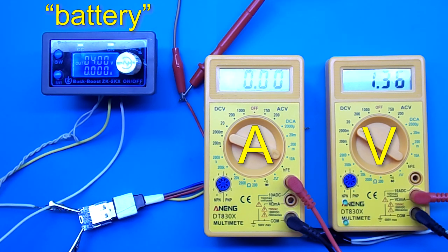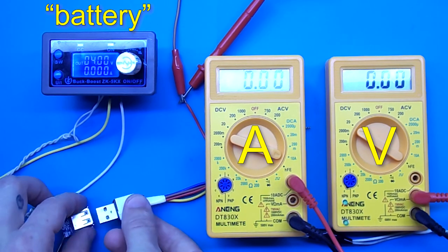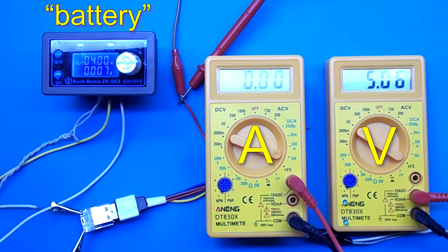To bring the converter back to life, you must turn off the load. After that, the voltage at the output of the converter rises again and it can be used.